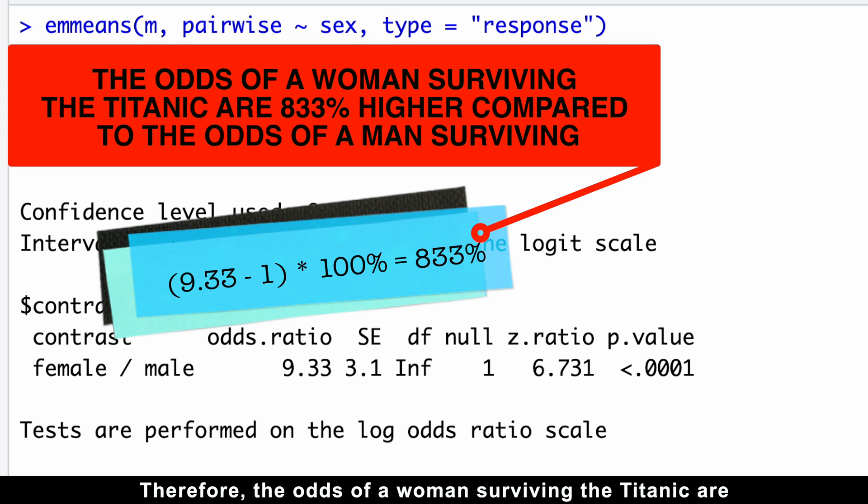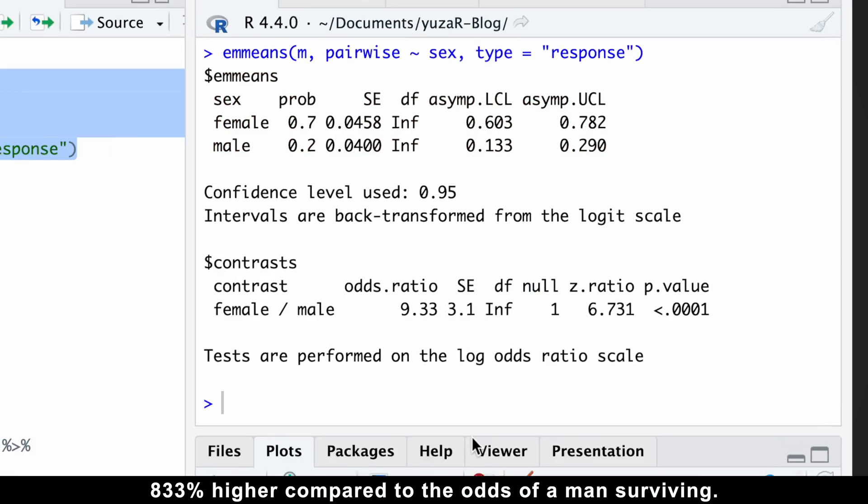Therefore, the odds of a woman surviving the Titanic are 833% higher compared to the odds of a man surviving.